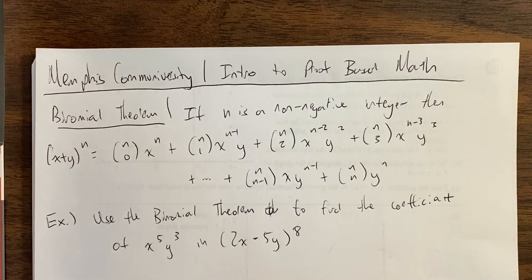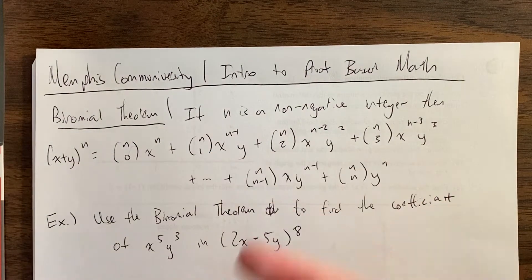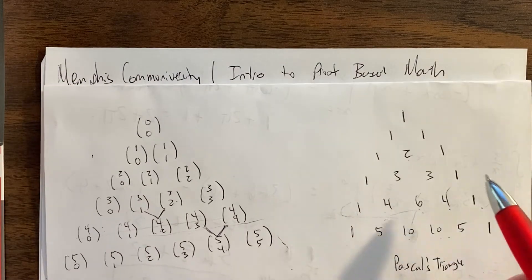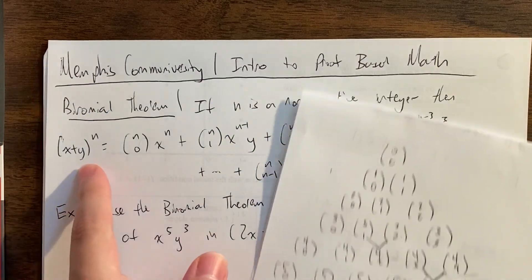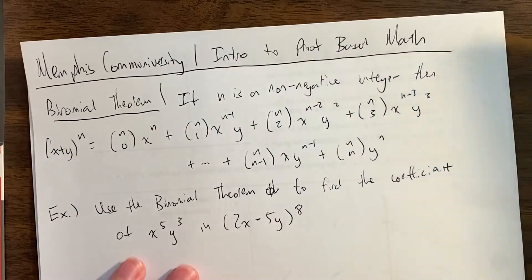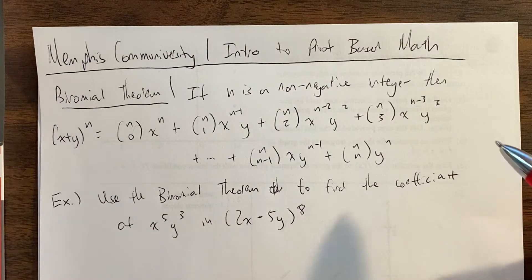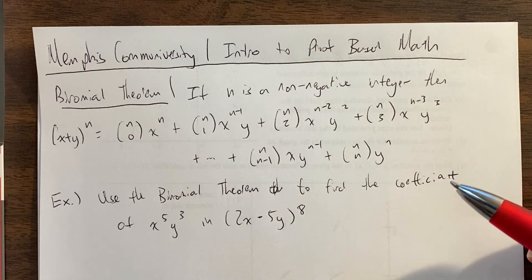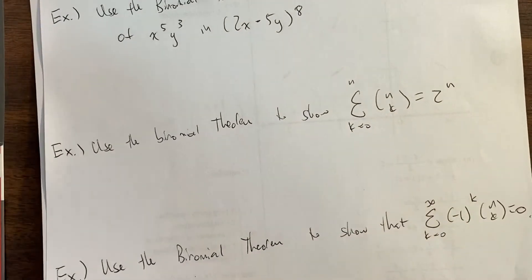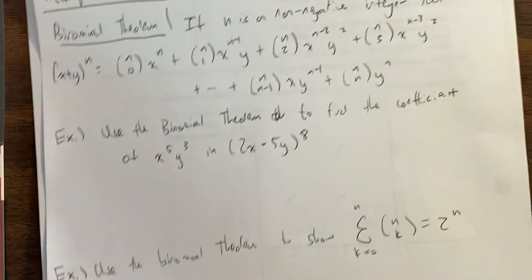When you start expanding polynomials, what's remarkable is that the coefficients end up being the binomial coefficients. For example, if you want to expand something to the fourth, these will be the coefficients. We won't prove that today, but you've probably already seen the binomial theorem before — maybe another math teacher has proved it to you.